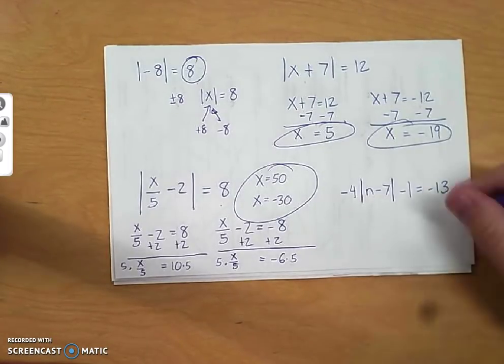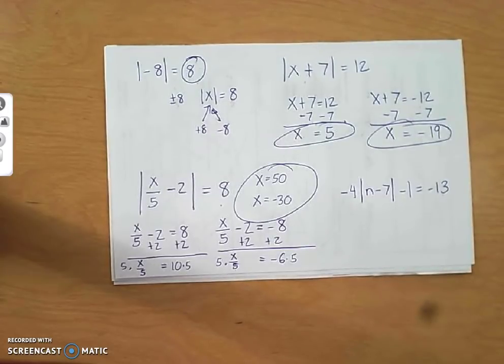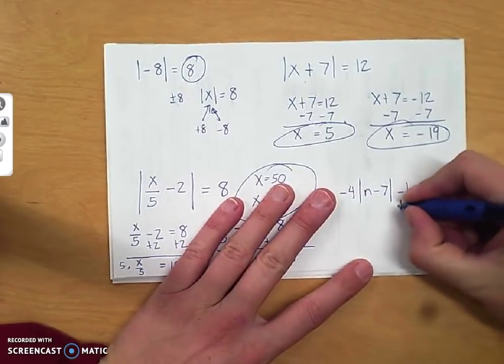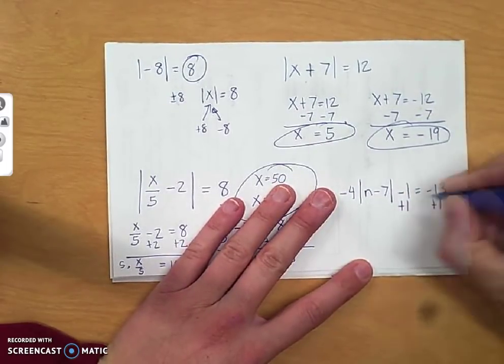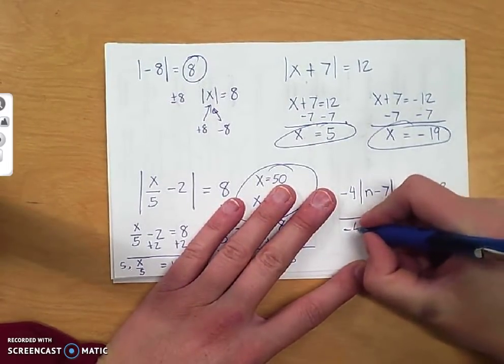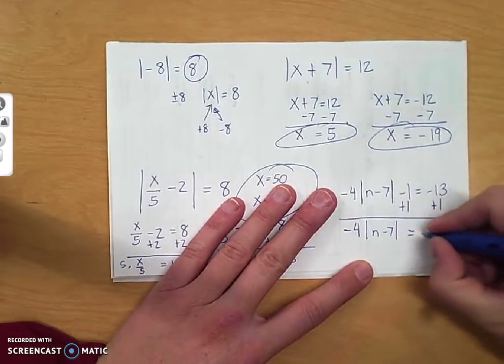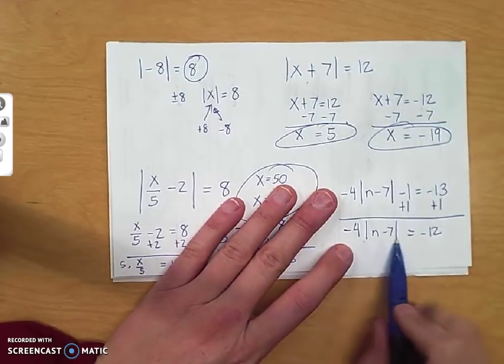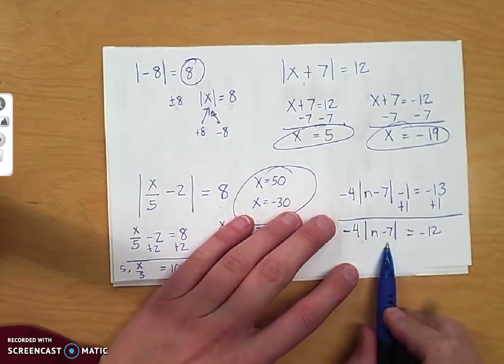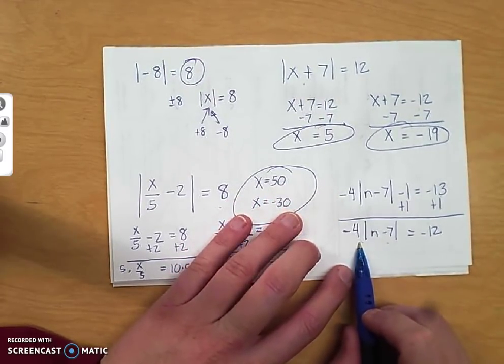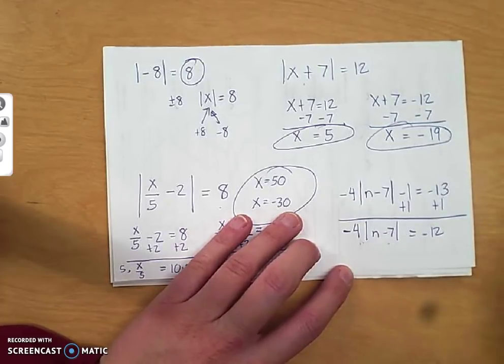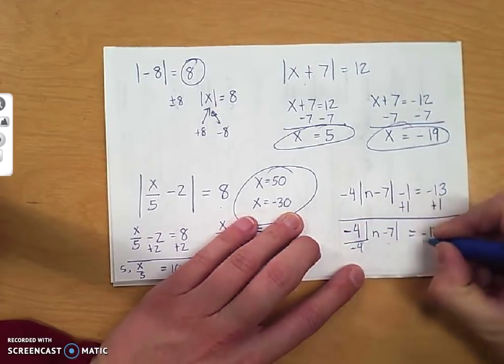A lot of you just said positive 13, negative 13. No. Absolute value by itself. Add 1, and I get negative 4 times the absolute value of n minus 7 is equal to negative 12. Again, absolute value is not by itself. You cannot distribute on absolute value. Don't distribute. Divide by that negative 4.